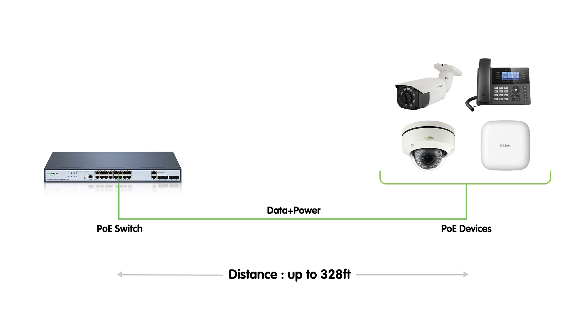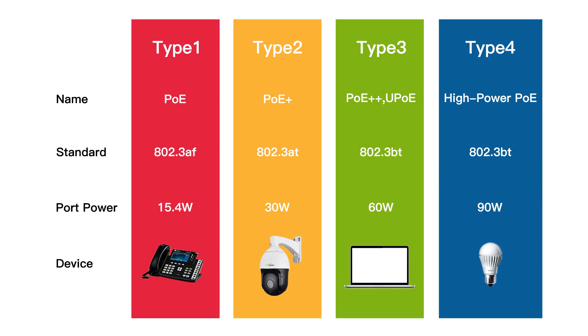PoE switches come in various types, each designed to meet specific power delivery needs. Standard PoE — IEEE 802.3af — is the original standard, capable of delivering up to 15.4 watts per port, suitable for devices with modest power requirements such as IP cameras and VoIP phones. PoE Plus — IEEE 802.3at — offers increased power delivery providing up to 30 watts per port, ideal for more power-hungry devices like PTZ cameras and advanced wireless access points.